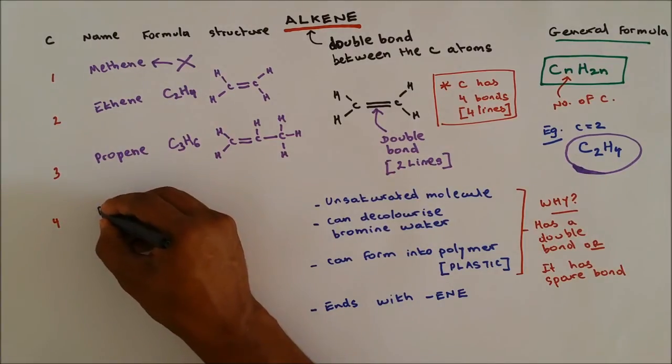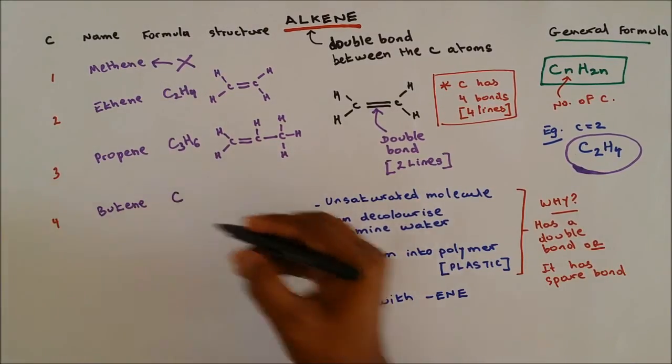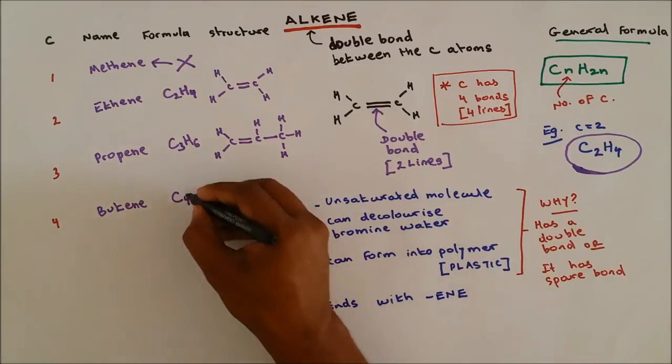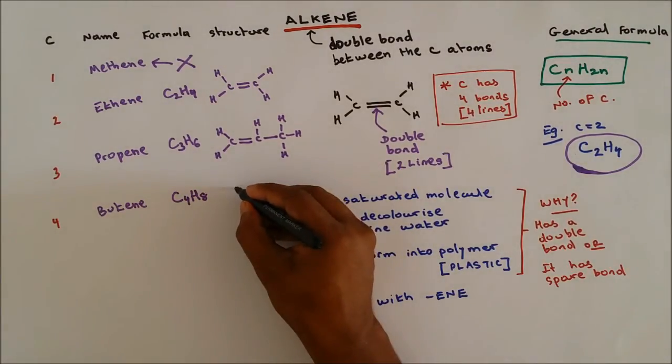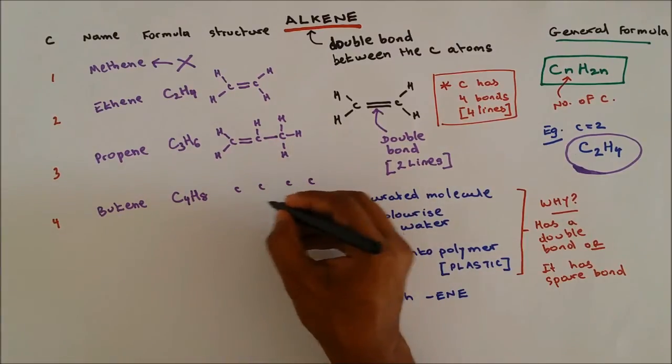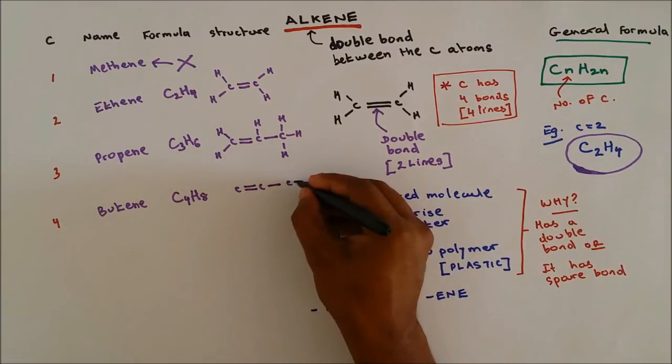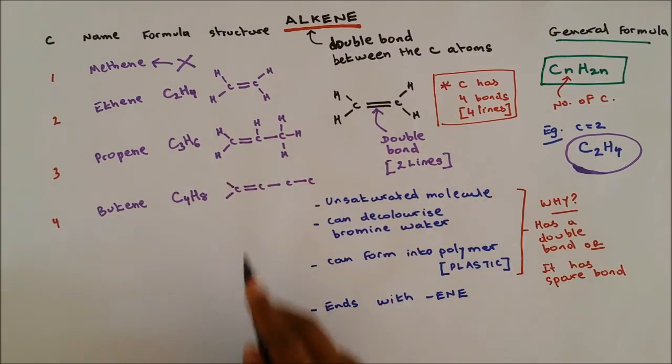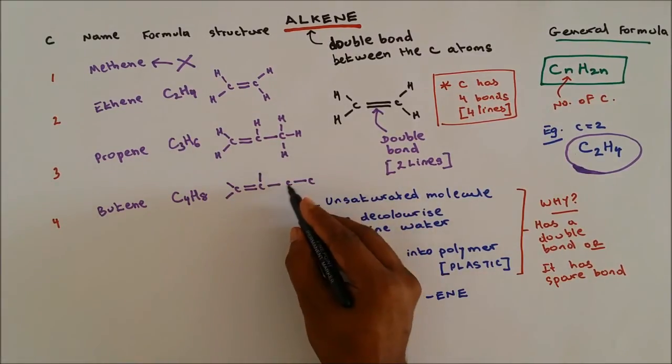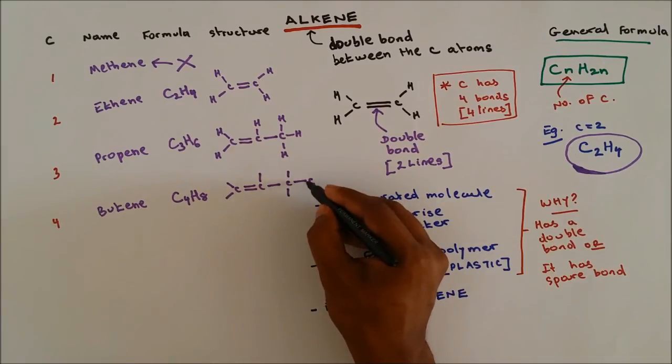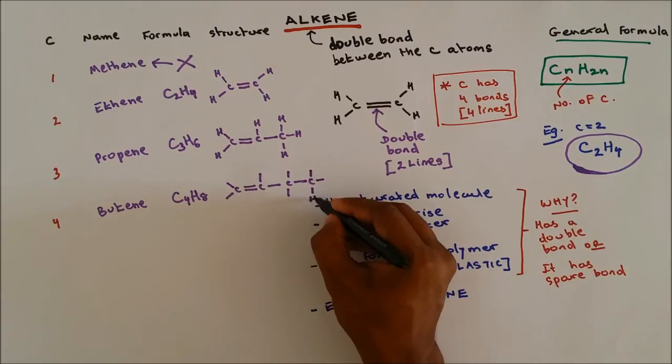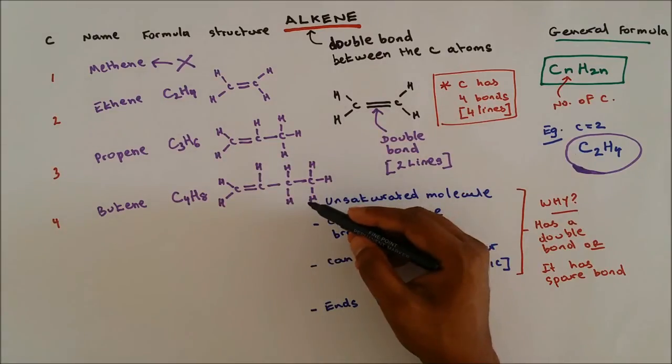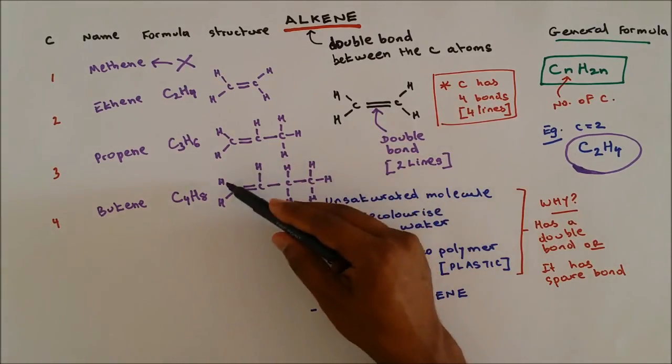The last one is butene. C is 4. Hydrogen 2 times 4 is 8. So we're going to have four carbons and only one of them is a double bond, the rest of them is a single bond. So this carbon has two so you can have two more. This one has three so you can have one more. This one has two so you can have two more. And this one has one so you can have three more to bring it to four. And if you count the number of hydrogen: one, two, three, four, five, six, seven, eight - adds up to eight.